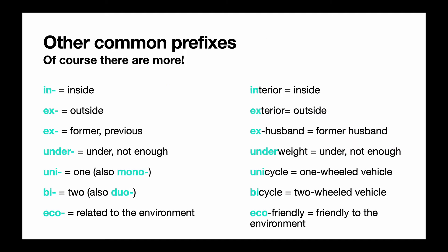There are lots of other common prefixes. 'In' is for inside, like interior. 'Ex' is for outside, like exterior. 'Ex' can also mean former or previous, like ex-husband or ex-boyfriend. 'Under' can mean not enough, so underweight is the opposite of overweight. 'Uni' or 'mono' means one, so unicycle is a one-wheeled vehicle. 'Bi' means two, so bicycle is a two-wheeled vehicle. And 'eco' can mean related to the environment, like eco-friendly.